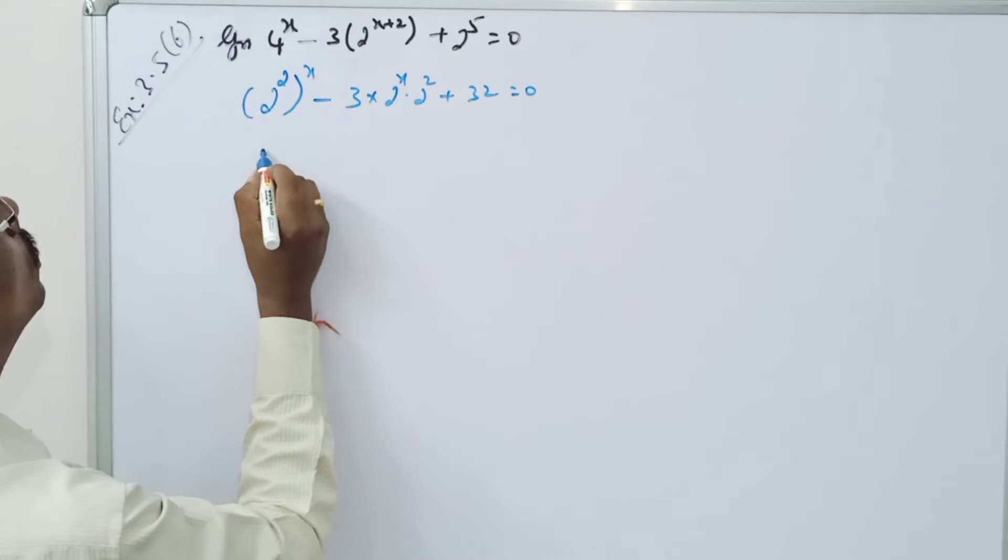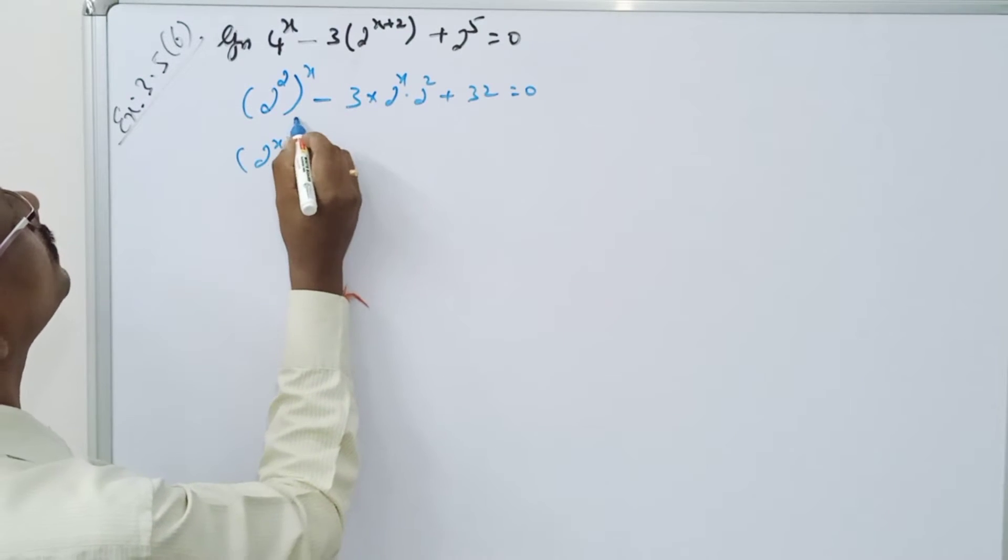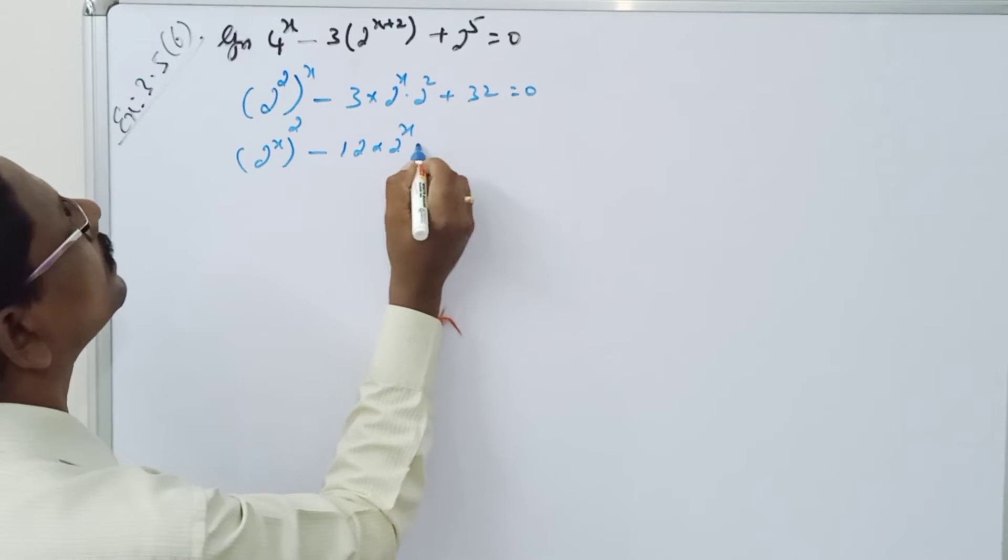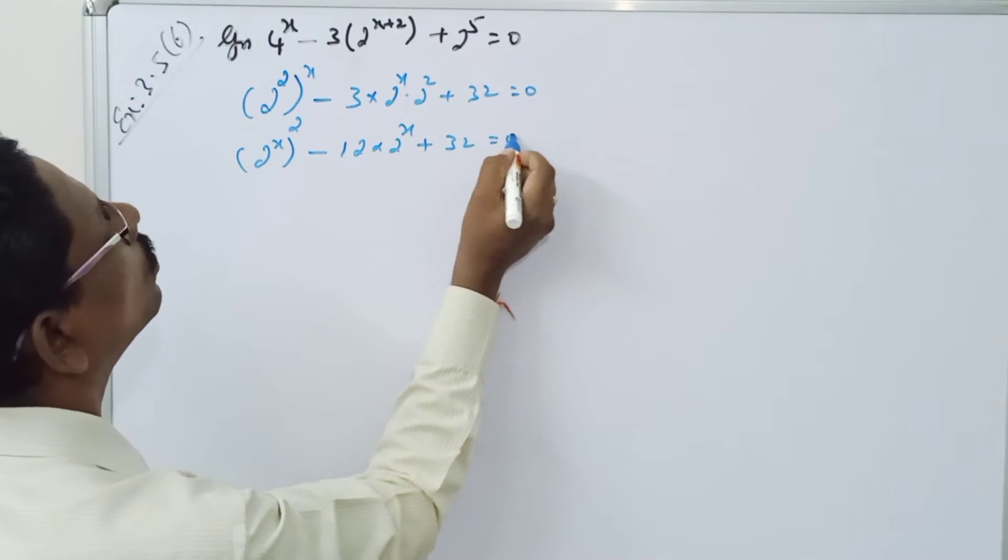equals 0. So 2 to the power x, the whole squared, minus 12 times 2 to the power x plus 32 equals 0.